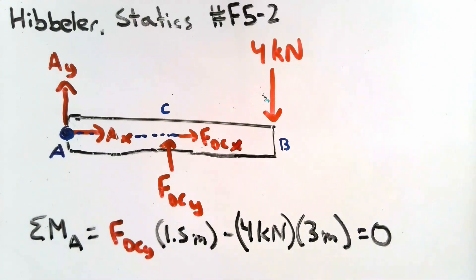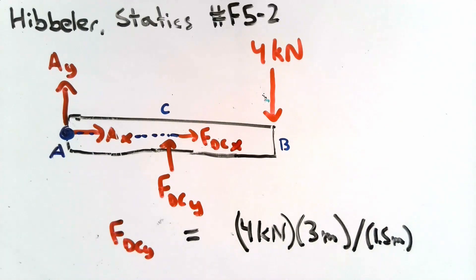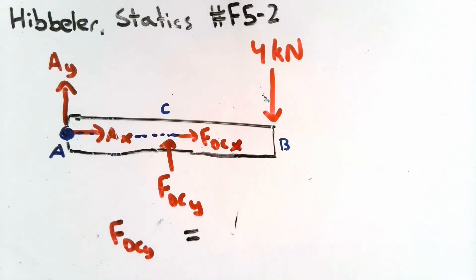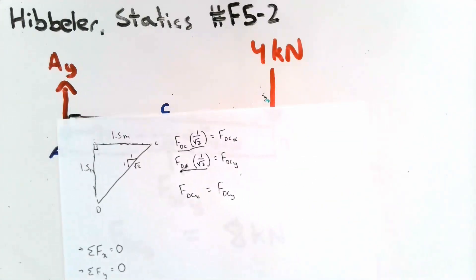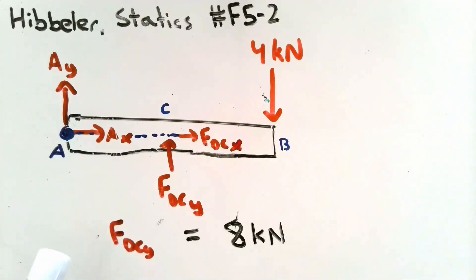The y-component of force DC acts at a distance of 1.5 meters from point A, producing a counterclockwise (positive) moment. The 4kN force acting at point B is 3 meters from point A, producing a clockwise (negative) moment. Setting the sum of moments equal to zero and solving: F_DC_y equals 4kN times 3m divided by 1.5m, which gives F_DC_y equals 8kN. Since F_DC_x equals F_DC_y, we also get F_DC_x equals 8kN — so we found two unknowns in one equation.